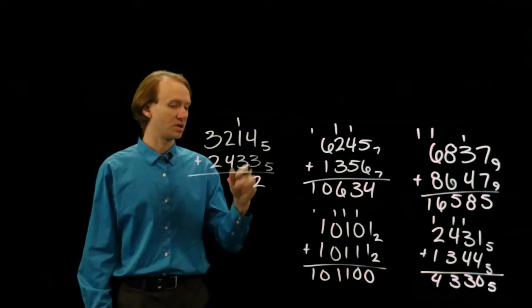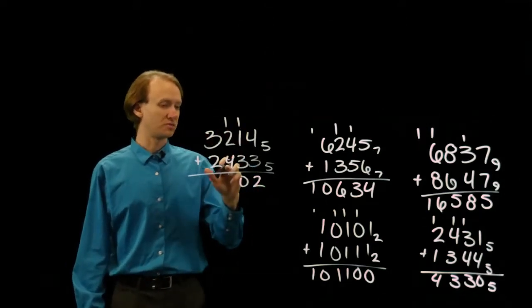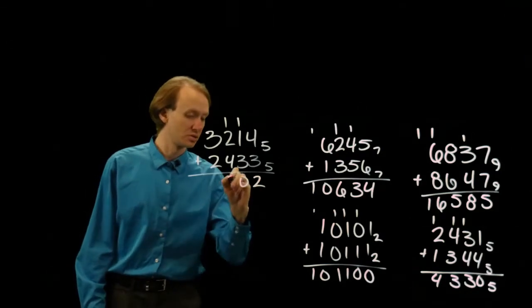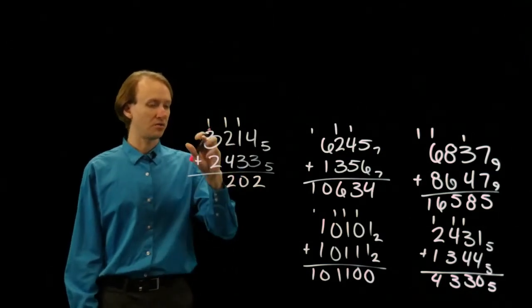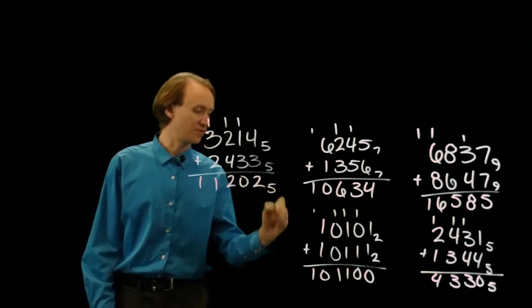1 plus 1 plus 3 gives me 10. And, 1 plus 4 gives me 10 plus 2. Now, I have 3 plus 2 is 10, plus 1 is 11 in base 5.